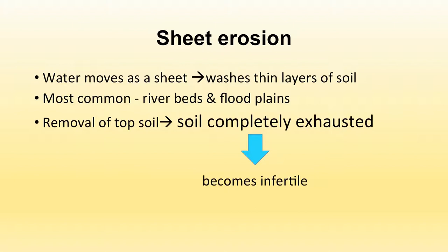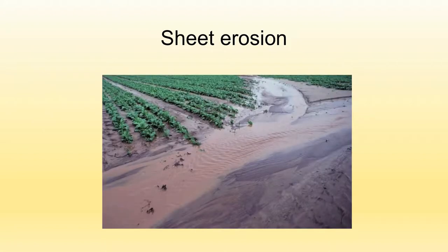The second type is sheet erosion, where soil or sediment is removed over a large area in the form of a sheet. Water moves as a sheet and washes away thin layers of soil with it. It is most commonly found in river beds and flood plains. The removal of top soil causes the soil to become completely exhausted and infertile. The muddy water visible in pictures is carrying the top layer of soil.